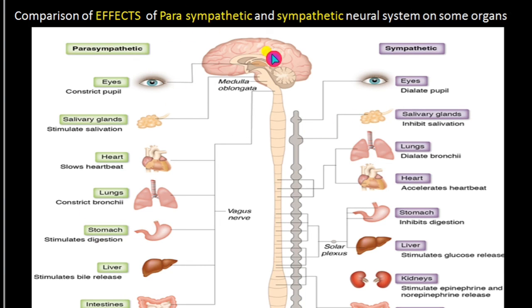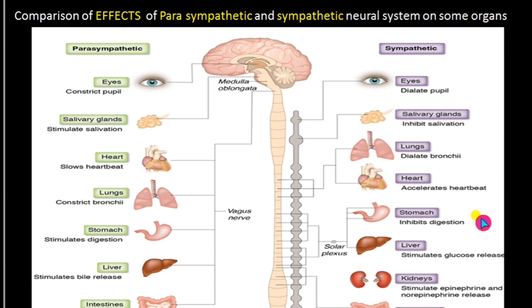The parasympathetic and sympathetic neural systems perform antagonistic functions — that is, opposite functions. If you remember the functions during sympathetic innervation, you write the opposite for that, and then the parasympathetic functions will be easily remembered. Hope you understand the lesson.